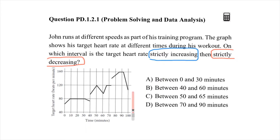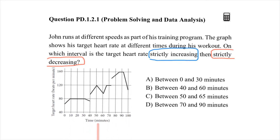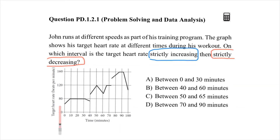Let's check the graph. There are some lines — some going up, some are straight, and some going down. The x-axis represents time in minutes: 10, 20, 30, 40, going up to 100 minutes. The y-axis represents the target heart rate in beats per minute, starting at 40 at the bottom, then 80, 100, 120, 140, 160.